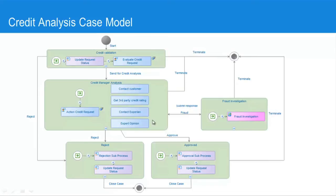We could also pass the case to the fraud investigation team, who could then pass it on to a legal team and back to us — though we'll skip that step in this demonstration for time's sake. Once the credit manager is happy with the analysis phase and wishes to reject or approve, we go on to either the rejection or, in this case, the approval step, whereby the customer will receive an email and we will go through the approval process and get the card provisioned.